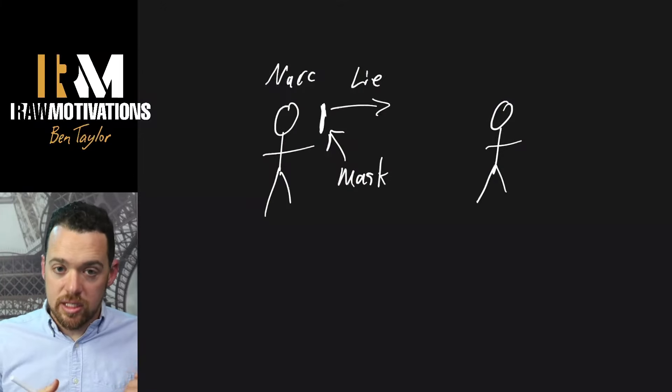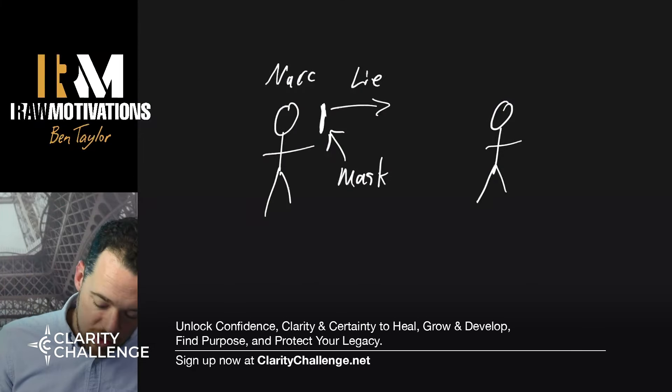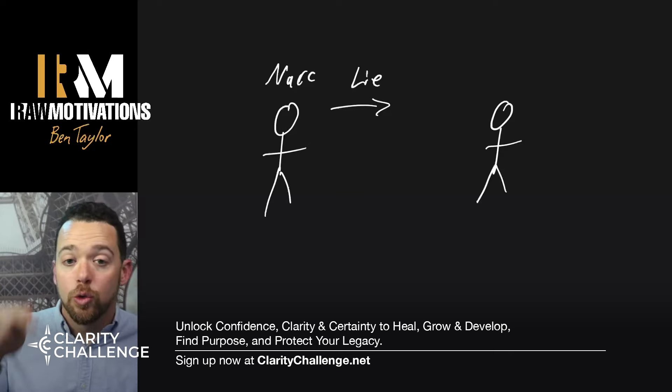And then later, that starts to fall apart, and you start to realize, wait a second, something wasn't true. Initially, you have the narcissist doing these lies about himself. Here's the mask, this is who I am. Then you have it start to move, and you have it start to change, where you start to see the mask drop, and you start to see exactly who he is.